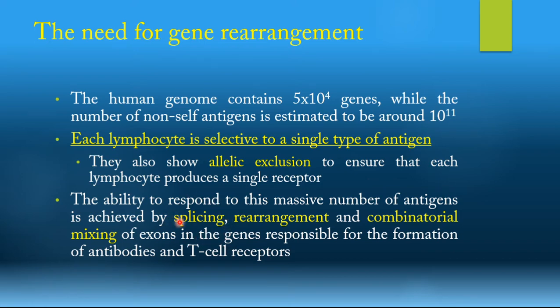This ability for our body to make antibodies for every single antigen in the environment is a result of splicing, rearrangement, and combinatorial mixing of exons in the genes — the genes responsible for the formation of the antibodies and the T-cell receptors.